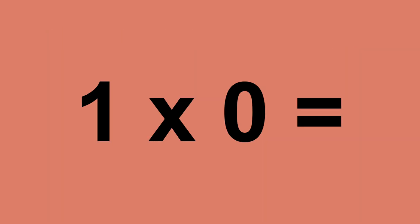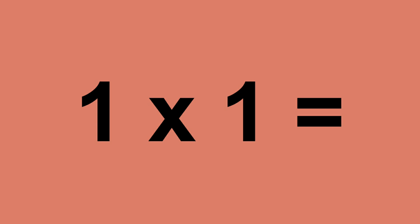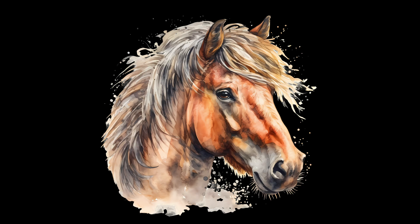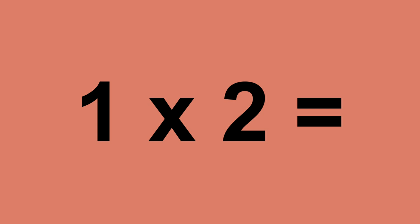1 times 0 equals 0. 1 times 1 equals 1. 1 times 2 equals 2.